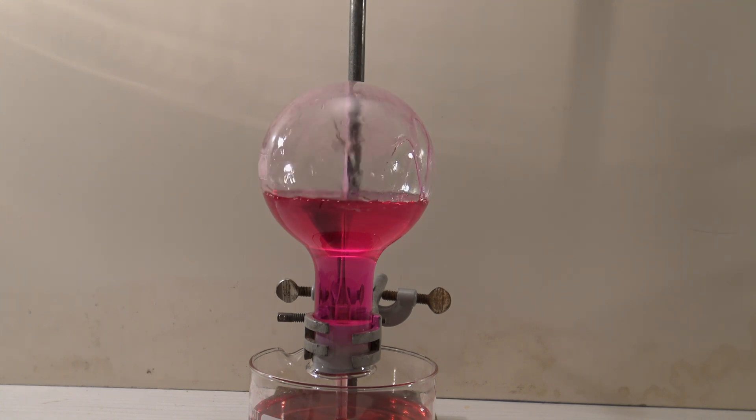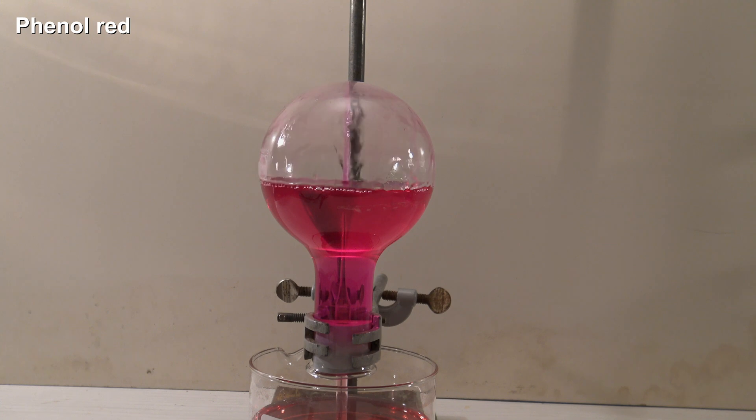Usually phenolphthalein is used as the indicator because it is colorless at a neutral pH and turns pink in a basic solution, but in this case phenol red was used.